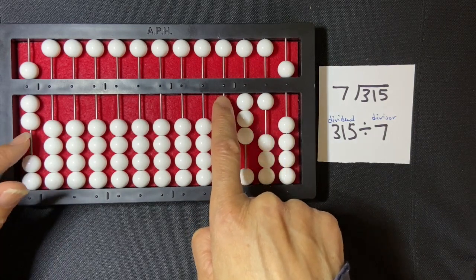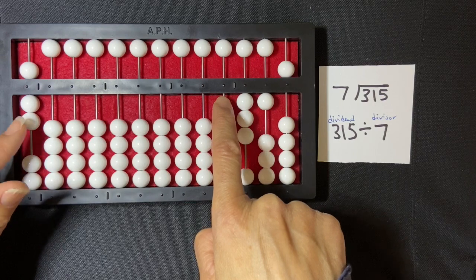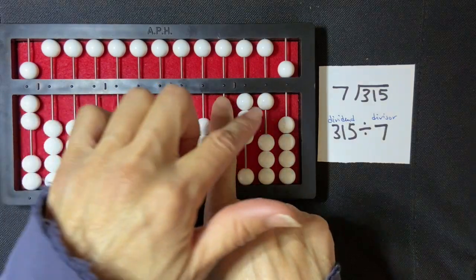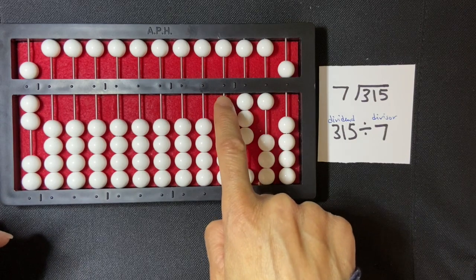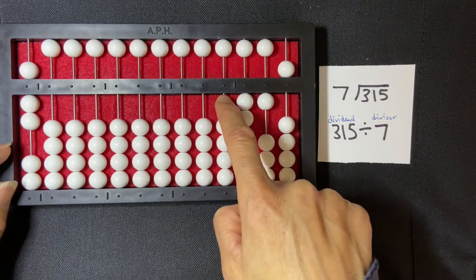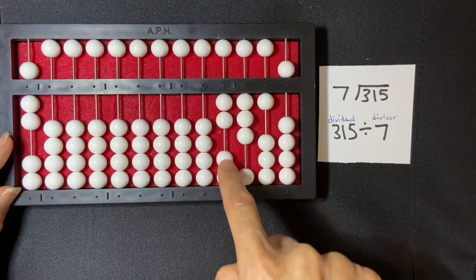So here I have seven. How many times does that go into 31? Well, I know that seven times four is 28, so I'm going to set four: one, two, three, four.